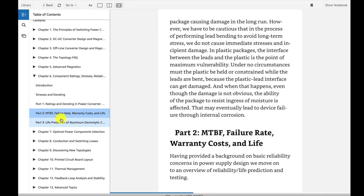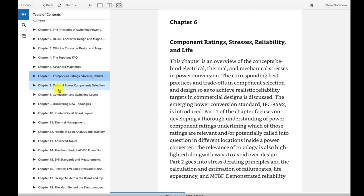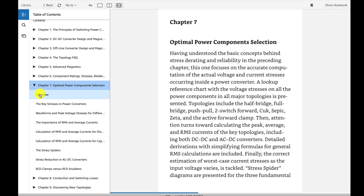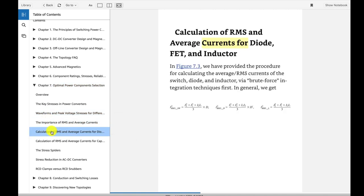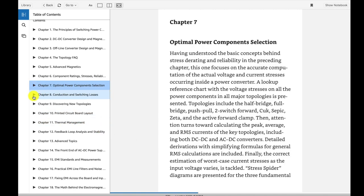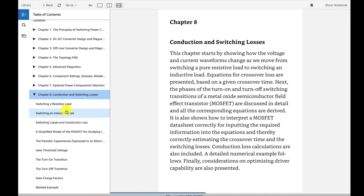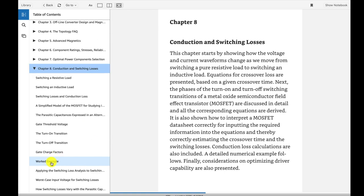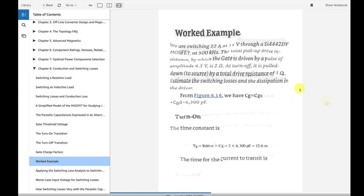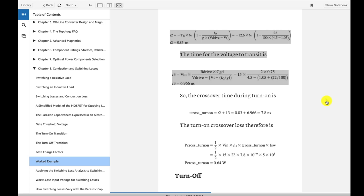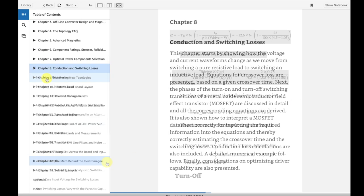Chapter 6, you see, it's component stress and ratings. Chapter 7, optimal power component selection. So he talks about some key factors and how to select components. And then Chapter 8, conduction and switching losses. This is a really interesting chapter. He has some worked examples here, and he breaks down the math and shows you how he calculates this in the worked examples.